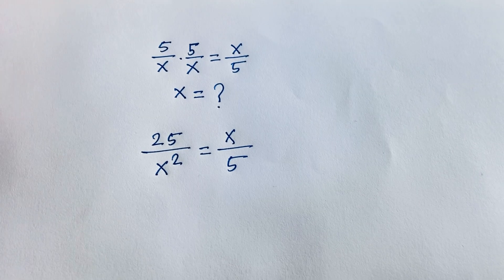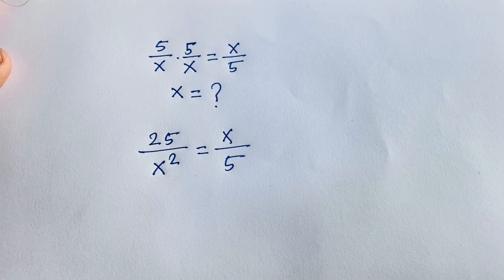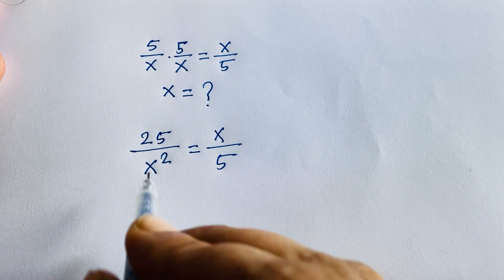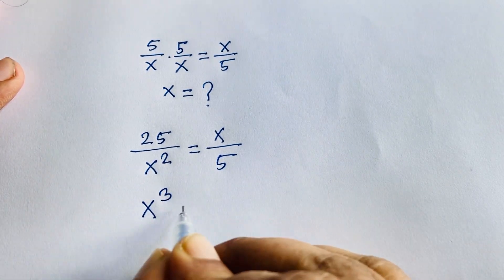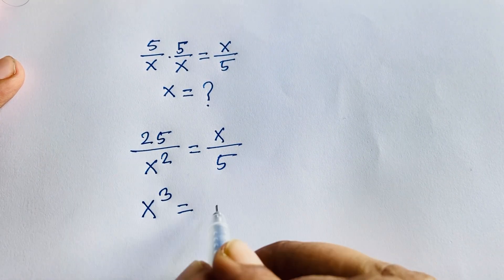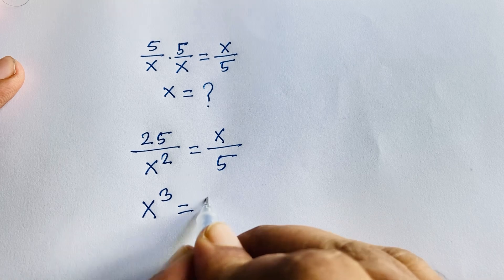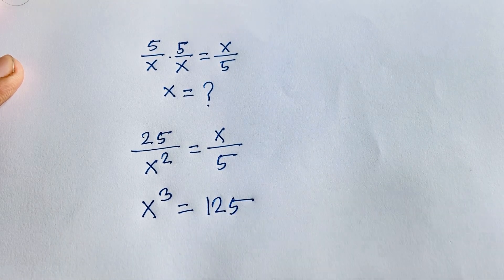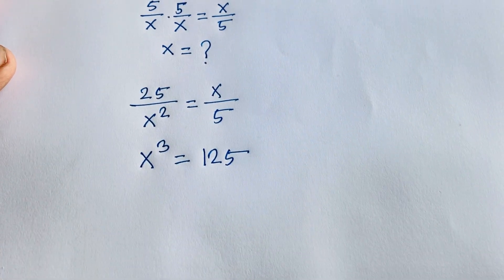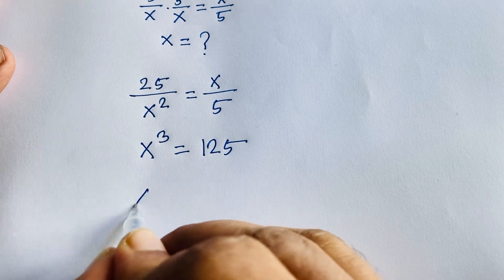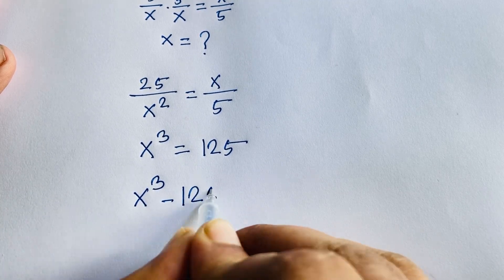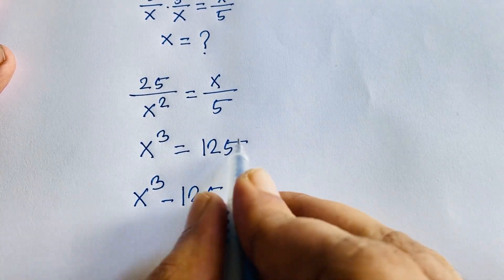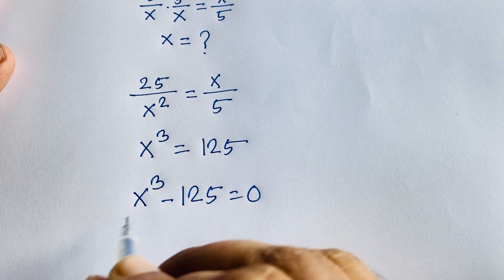Now at this moment, cross-multiplying gives us x squared times x, which is x to the power 3, equal to 25 times 5, which is 125. So the equation becomes x to the power 3 minus 125 is equal to 0, moving 125 to the left side.